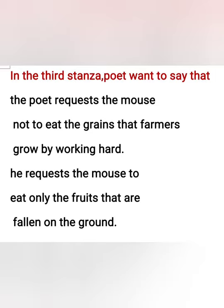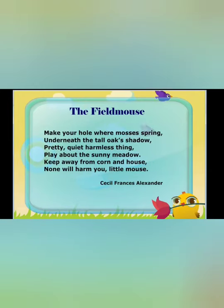In the third stanza, the poet requests the mouse not to eat the grains that farmers grow by working hard. I request you to eat only the fruits that are fallen on the ground — please eat only those fruits which have already fallen from the tree.